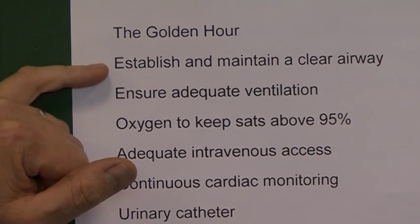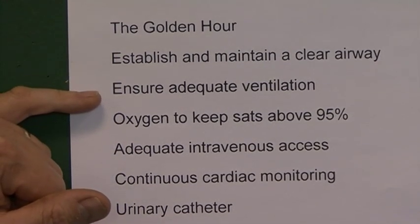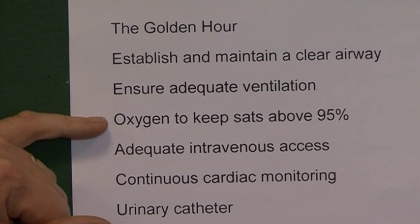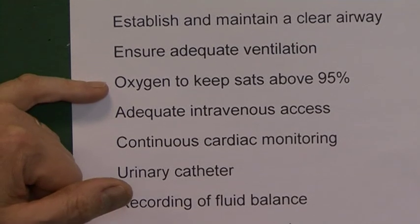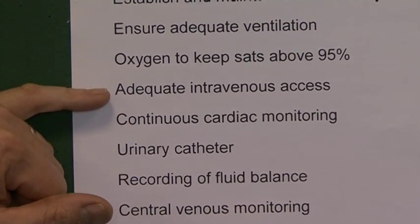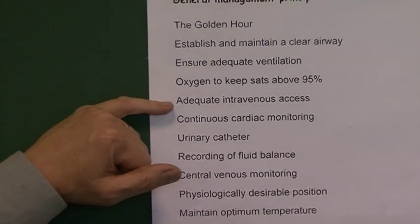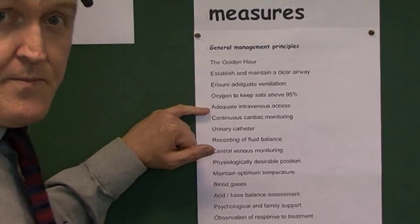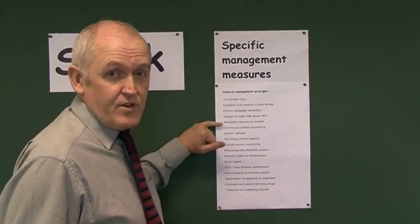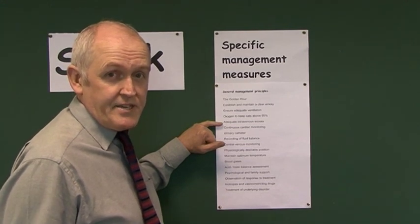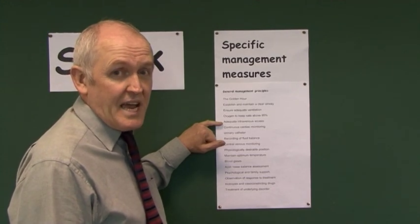Obviously we need to maintain a clear airway, ensure adequate ventilation, and keep oxygen saturations over 95% if possible. We also need adequate intravenous access — this normally means two peripheral large-bore cannulas, maybe one in each arm, to give intravenous drugs and intravenous fluids as required.